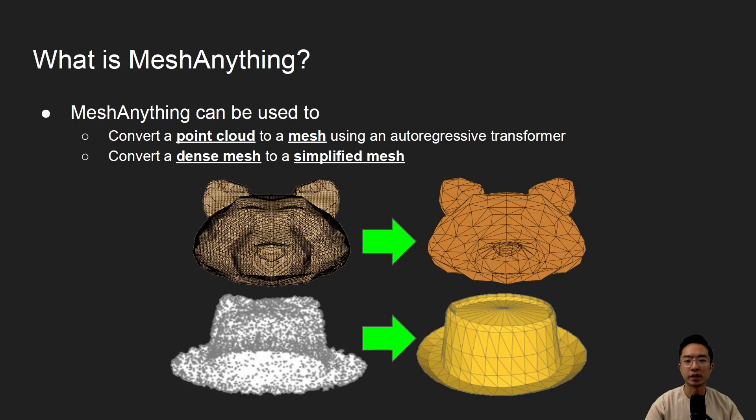So what is Mesh Anything? Mesh Anything can be used to do two things. One, it can be used to convert a Point Cloud to a Mesh, and it can also be used to take a dense Mesh and simplify the Mesh.